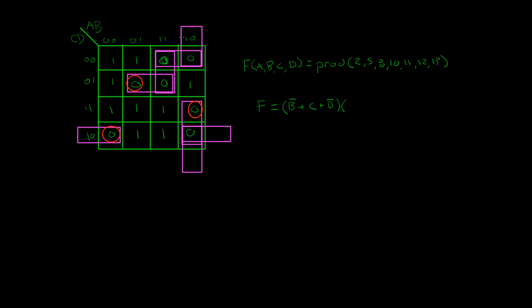Looking up, we see A and B are one and zero, so we get A-not plus B. Looking over, we see C is one, so that becomes plus not-C. So far we've taken care of these two zeros and these two zeros.